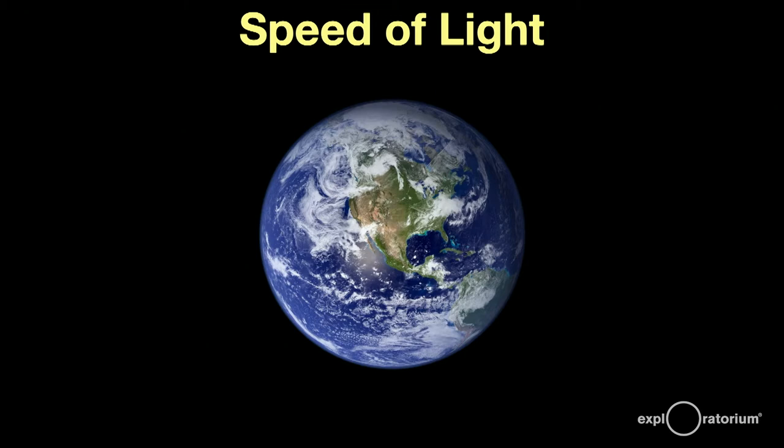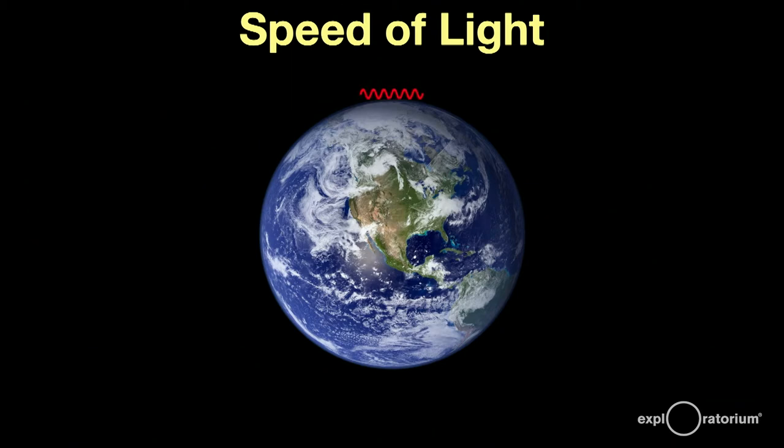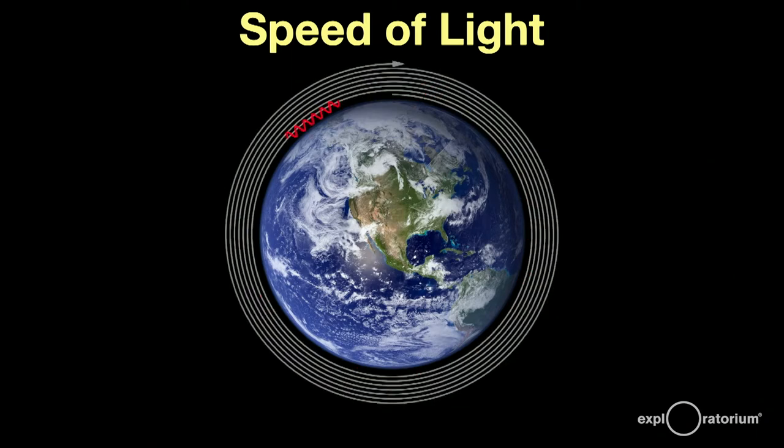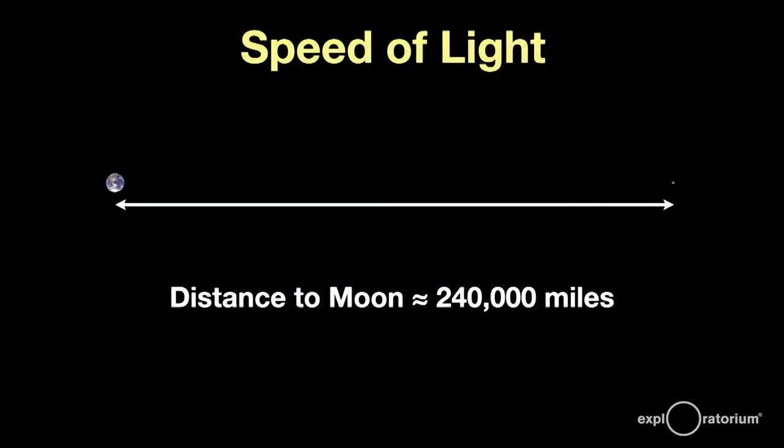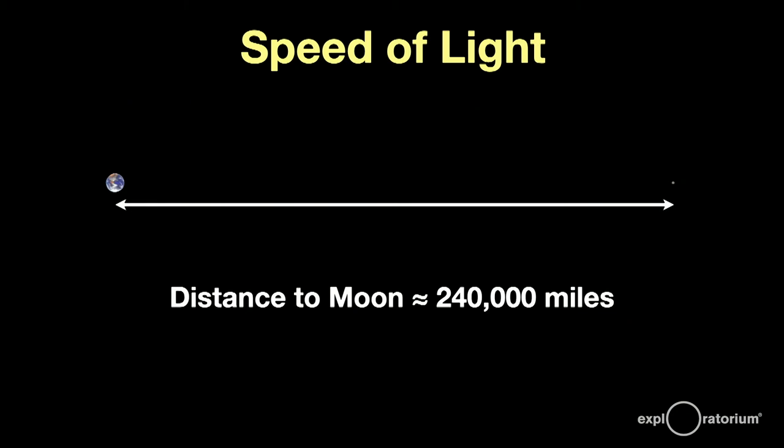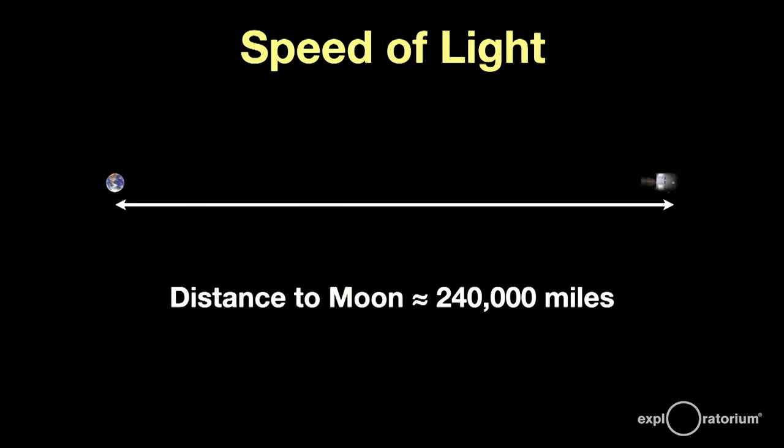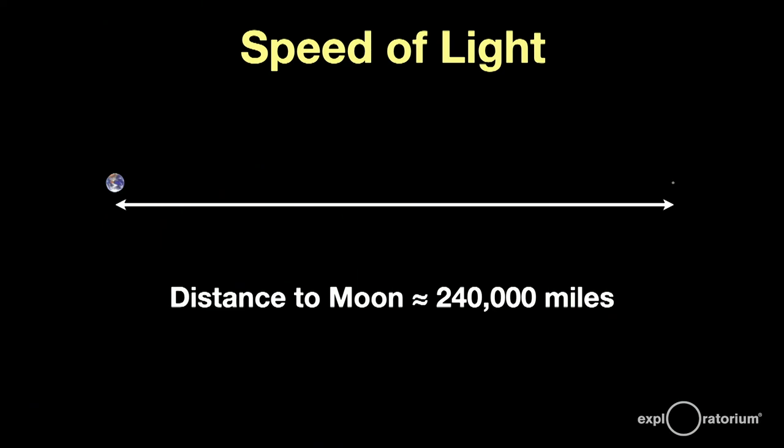Galileo failed because the speed of light is so unbelievably fast. Consider for a moment that light can travel around the Earth more than seven times in one second. What you see here is a proper scale model of the Earth-Moon system. Both Earth and Moon are properly sized, and they're the correct distance from one another. It took the Apollo astronauts three whole days to reach the moon in their tiny capsule.